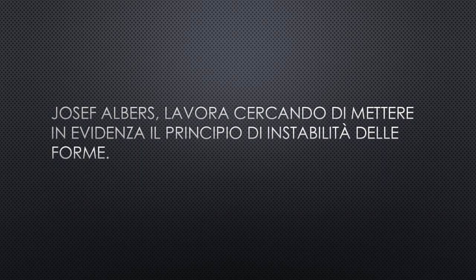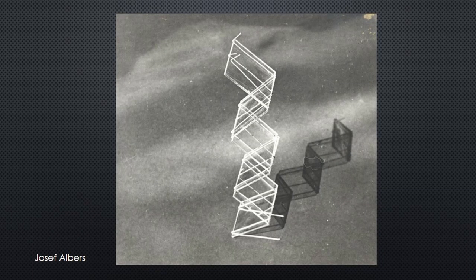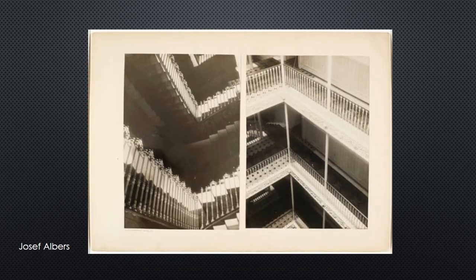Joseph Albers lavora cercando di mettere in evidenza il principio di instabilità delle forme. I suoi referenti partecipano attraverso le loro caratteristiche di instabilità: vediamo l'acqua, l'elemento di instabilità per eccellenza, e altri elementi che nelle realtà hanno una loro valenza ma che nell'immagine contribuiscono in modo diverso.